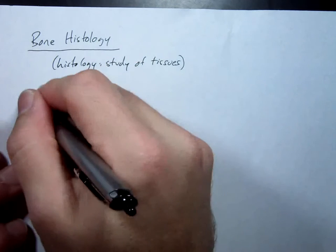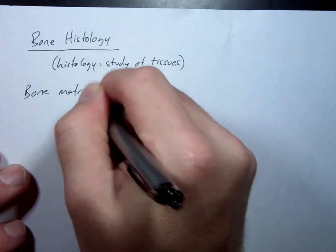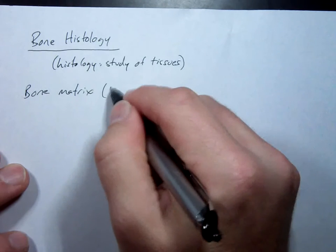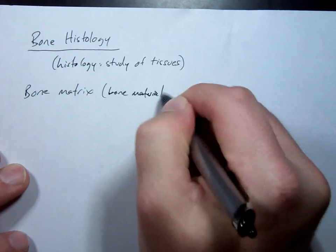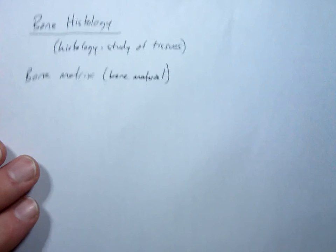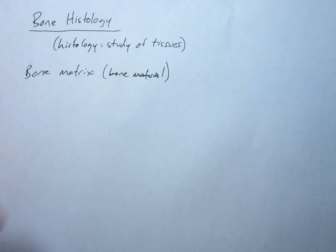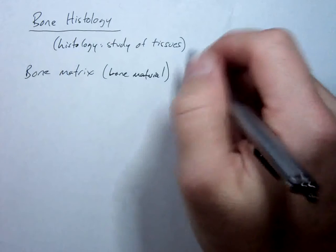Now, bone matrix — very simply, that means bone material. It's called a matrix because it kind of weaves back and forth and has fibers that are interwoven, and it makes like a matrix. Bone material is made of three main things.